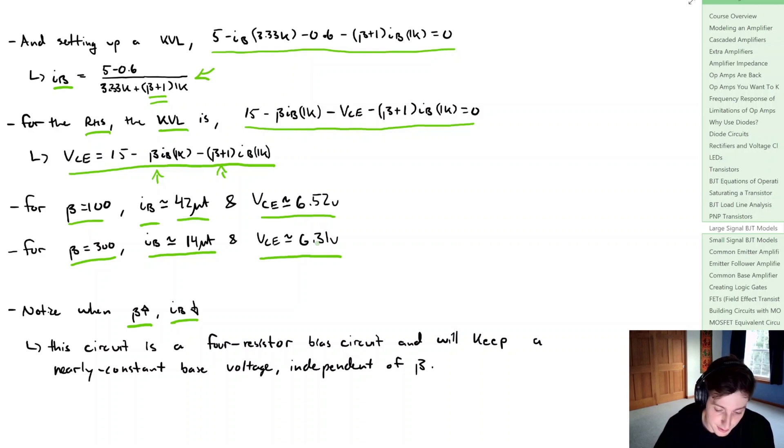This circuit is actually known as the 4-resistor bias circuit, and what this circuit will try to do is it'll try to keep a nearly constant base voltage independent of beta. By that nearly constant base voltage, we get this balancing effect between beta and the base current.